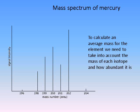Similarly, this spectrum is the spectrum of mercury. There are far more isotopes here — maybe six or seven isotopes in this case — and the height of the peaks can be used to work out how abundant the isotopes are. In this case, the isotope with a mass number of 202 is obviously the most abundant.